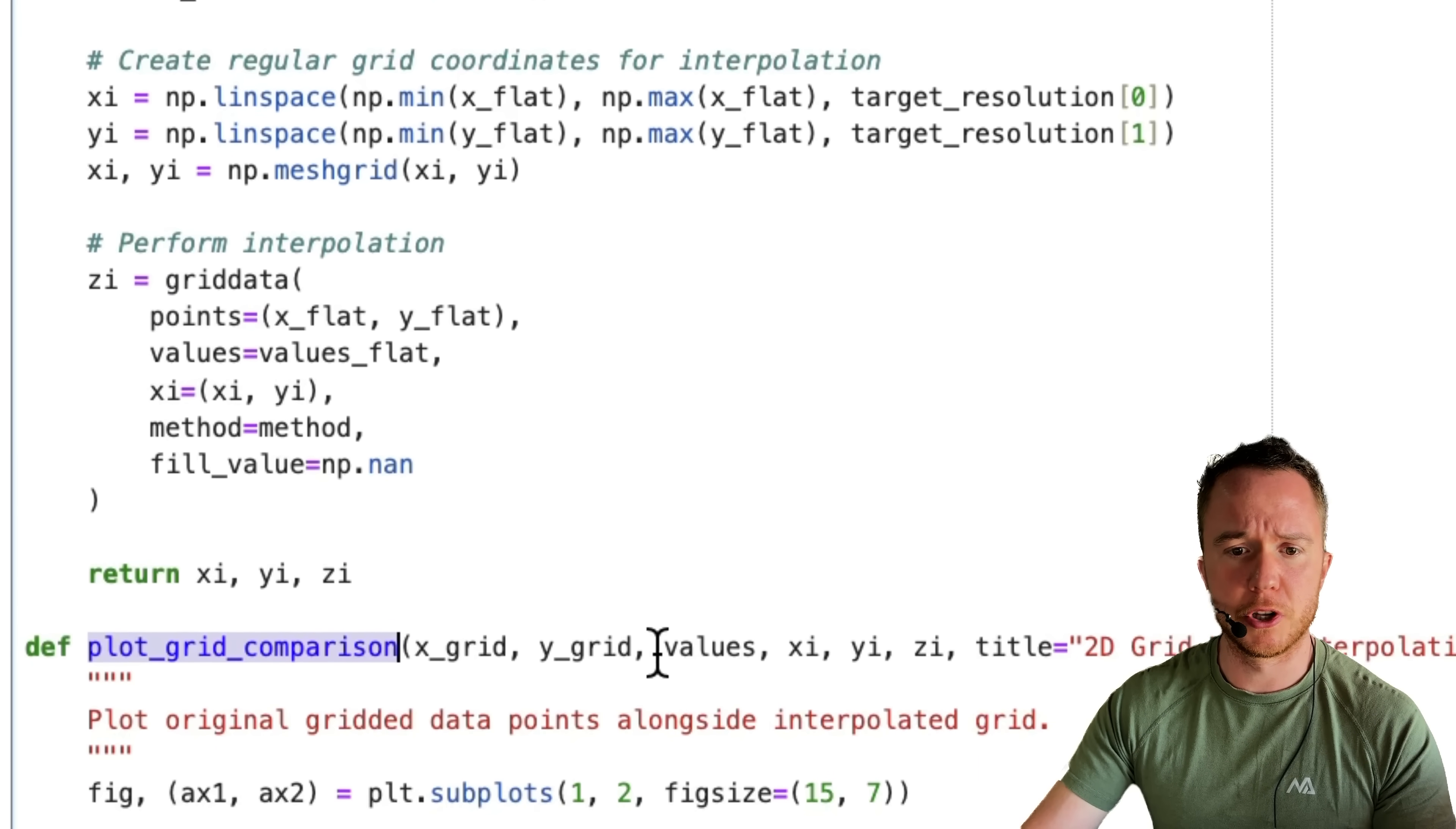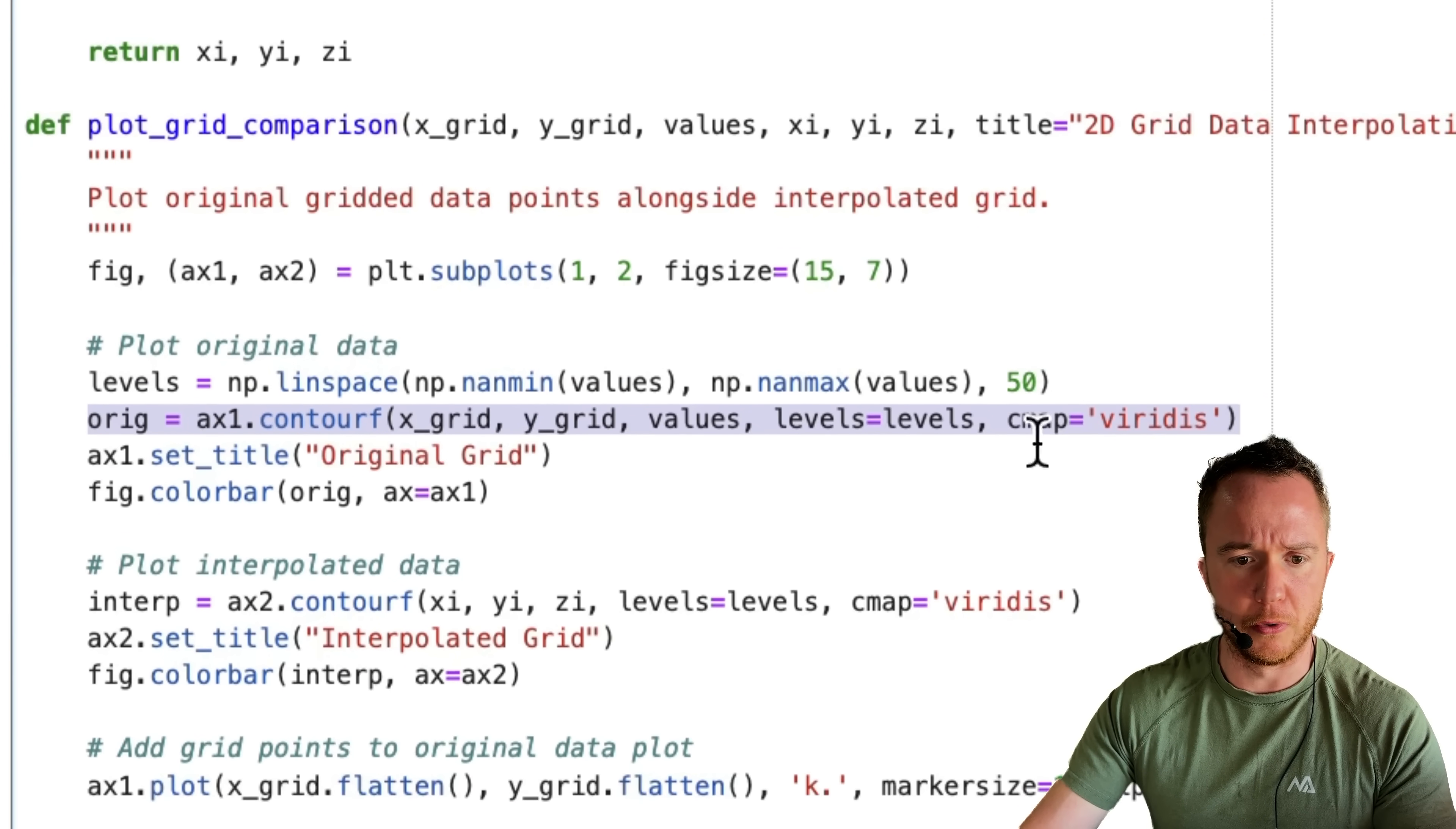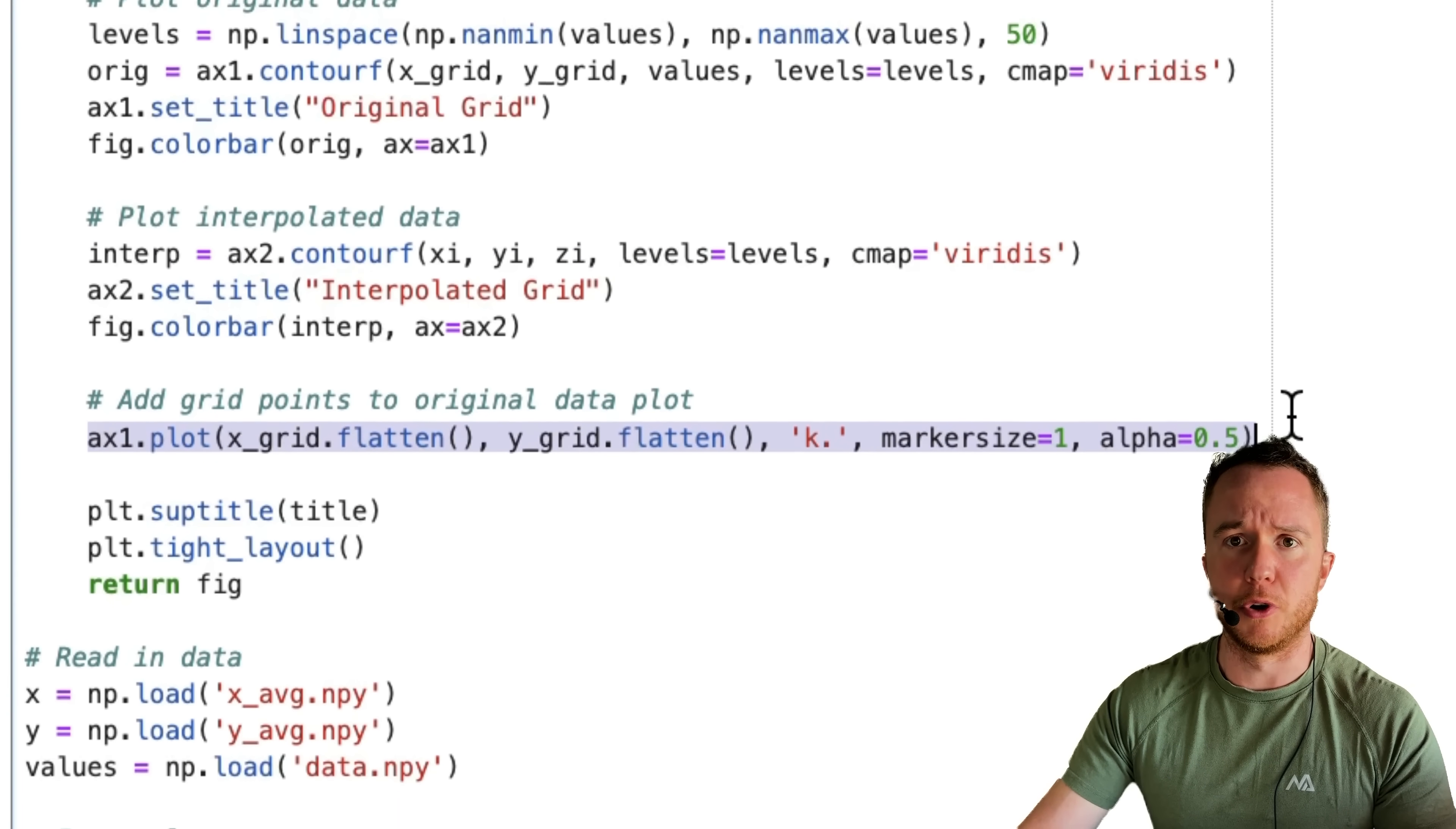The plotting function takes the original data, so the x_grid, the y_grid, and the values, also as input arguments, and the interpolated grids and values, and the rest is pretty straightforward. So we create a contour plot for the original data, another contour plot for the interpolated data, add the grid points to the original plot, and that's pretty much it.